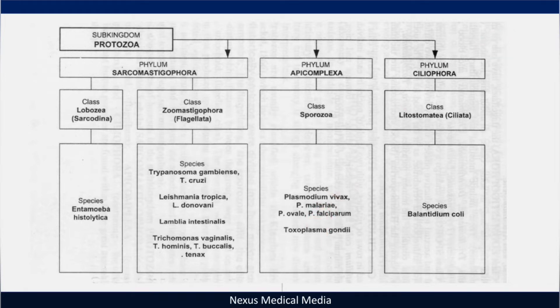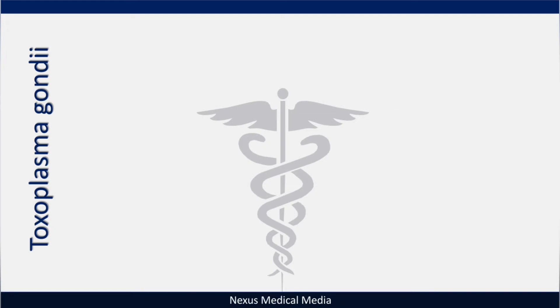Toxoplasma causes a disease called toxoplasmosis. There are three main conditions to discuss. First, in immunocompetent individuals — if this parasite attacks someone who is healthy — the patient will have mono-like symptoms, similar to infectious mononucleosis caused by EBV.